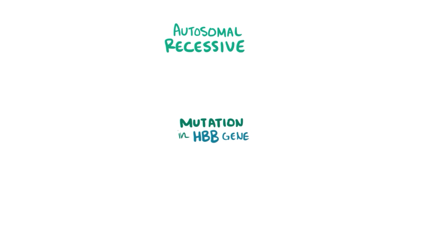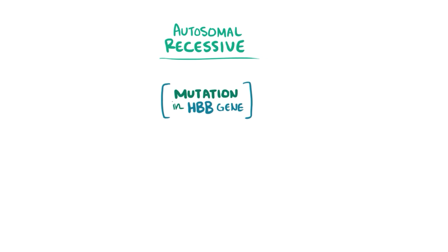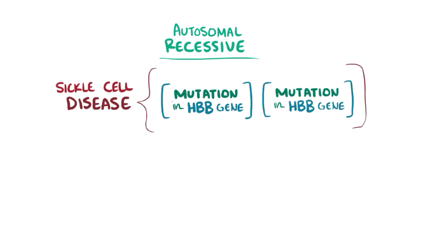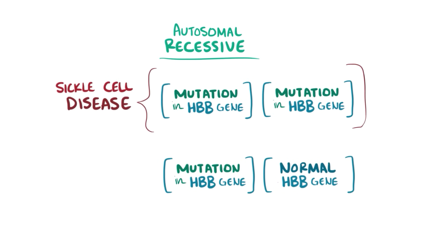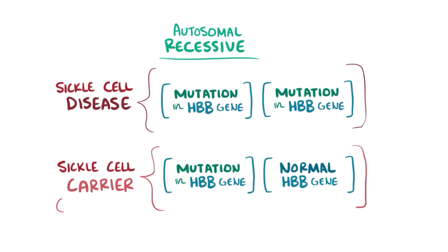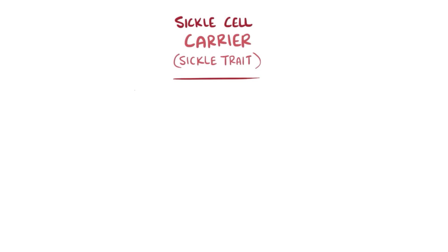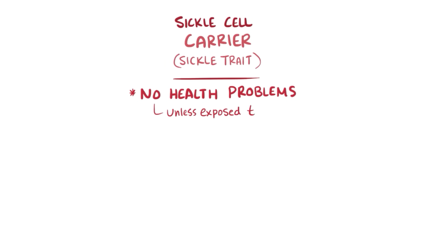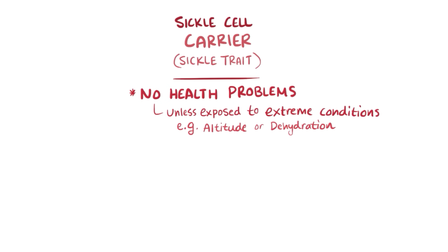Sickle cell is an autosomal recessive disease, so a mutation in both copies of the beta-globin gene is needed to get the disease. If the person has just one copy of the mutation and one normal HbB gene, then they are a sickle cell carrier, also called sickle trait. Having sickle trait does not cause health problems unless the person is exposed to extreme conditions, like high altitude or dehydration, where some sickle cell disease-like symptoms can crop up.